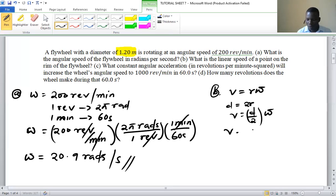That will be 1.2 meters over 2, and we multiply by 20.9. This is meters and that is radians per second.